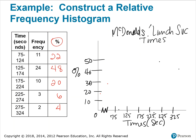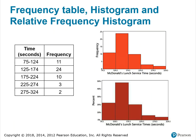The bar for 75 to 124 goes up to 22%, the next to 48%. The following bars are at 20, 6, and 4 — a little wobbly since I'm drawing by hand. The histogram looks very similar in shape to the previous one because it's the same data, just with relative frequencies instead of frequencies. You'll notice the textbook version uses class boundaries for the marks between bars and starts the x-axis at 74.5, but the distributions have the same shape.